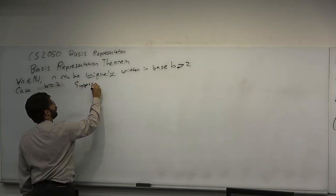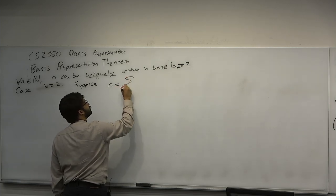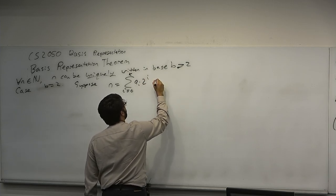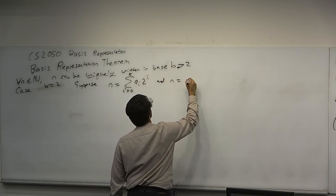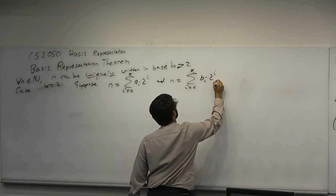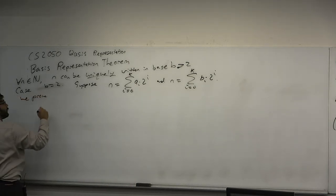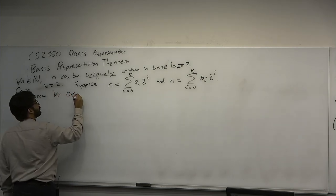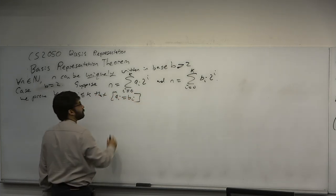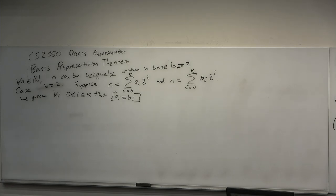Suppose n is equal to sum of a_i, i is equal to 0 to k of a_i times 2 to the i, and n is equal to the sum of i is equal to 0 to k of b_i times 2 to the i. We prove that if there's two ways to write a number, a_i and b_i, for all i between 0 and k, that a_i is equal to b_i. So we'll prove that if there are two ways to write a number, let's say a_i and b_i, that the sum of a_i and the sum of b_i, that a_i must equal b_i, right?